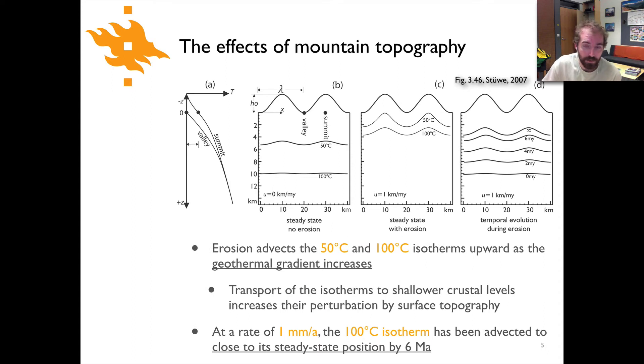Now things change when you include advection. What's shown in panel C is an advection velocity of 1 kilometer per million years or 1 millimeter per year. Now you can see the position of the 50°C and 100°C isotherms are much shallower in the crust and their general shape is much more like that of the overlying topography. This is quite a significant effect. The 100°C isotherm is now at depth range of around 3 to 4 kilometers where it was previously at 10 kilometers depth, so the crust is obviously much hotter in this case.